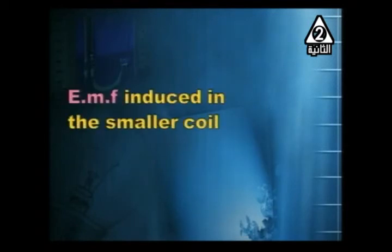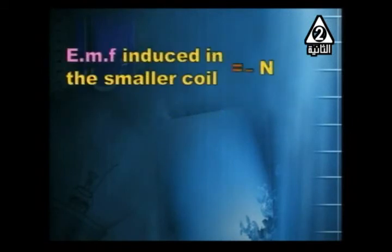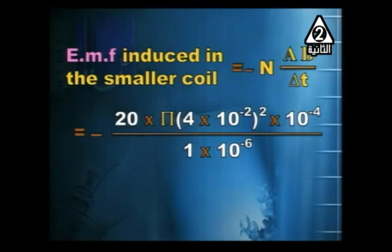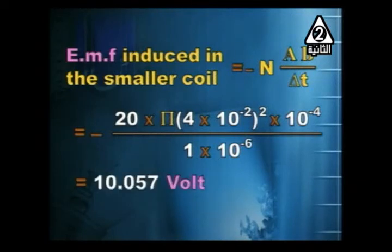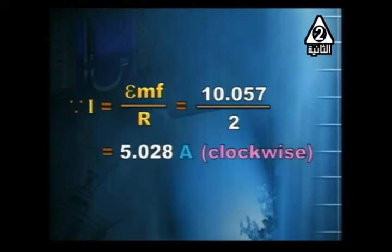The induced EMF in the smaller coil by Faraday's law: EMF = N × ΔΦ/Δt = N × A × B / Δt = 20 × π × (4 × 10⁻²)² × 10⁻⁴ / (1 × 10⁻⁶) = 10 V. The induced current = EMF / R = 10 / 2 = 5 A (approximately 5.028 A) in the clockwise direction.